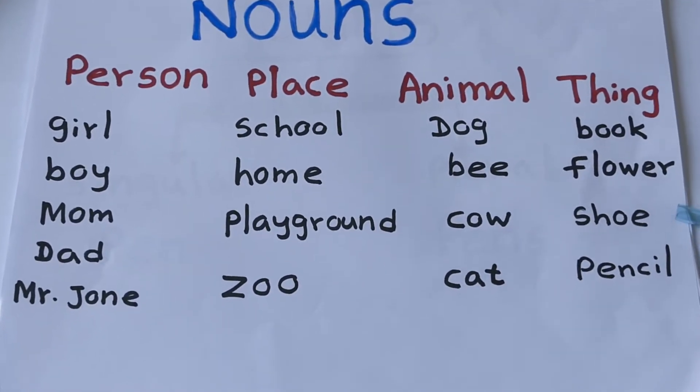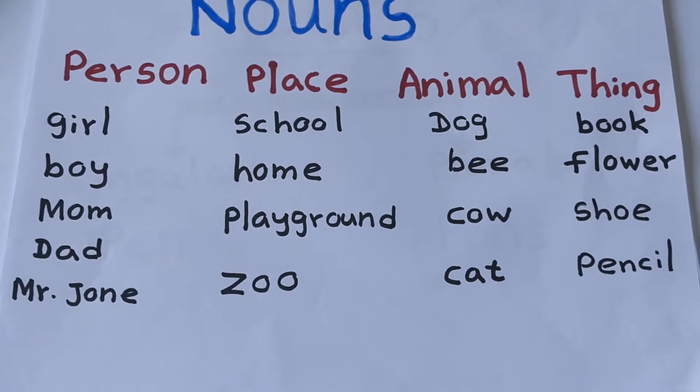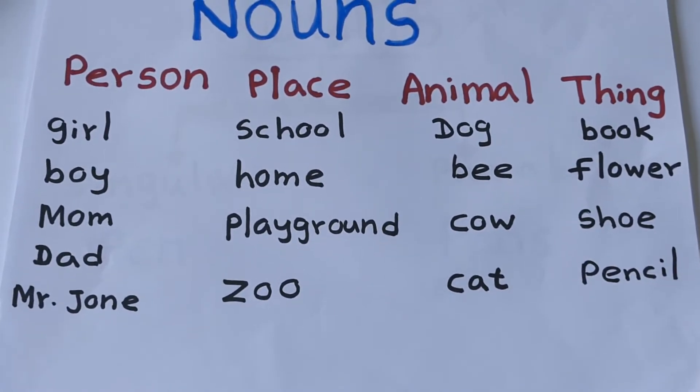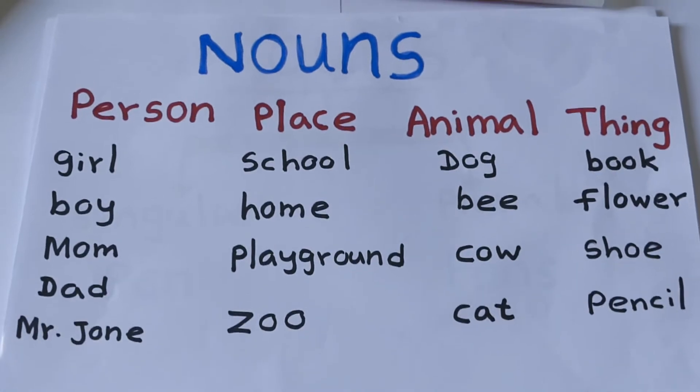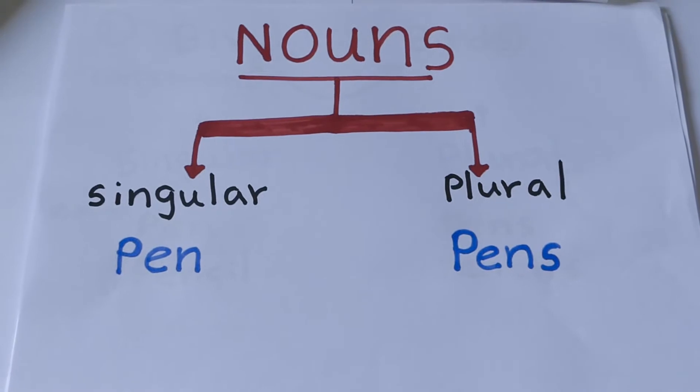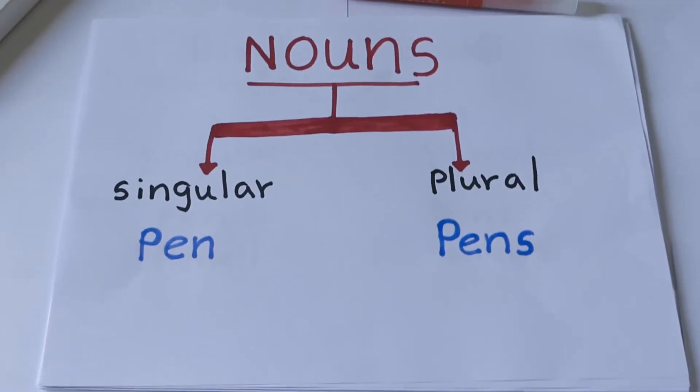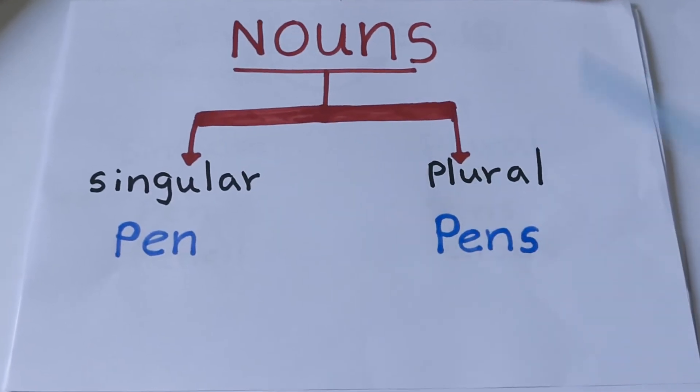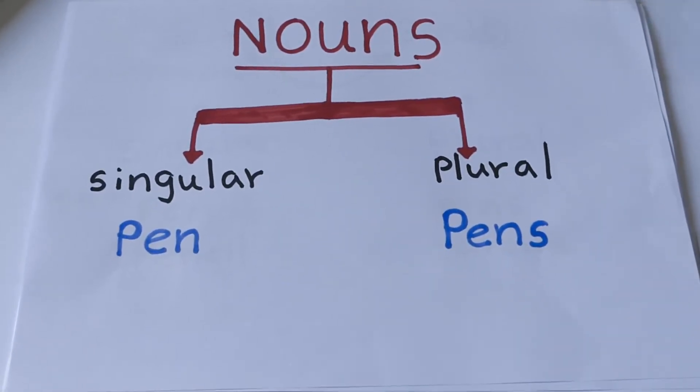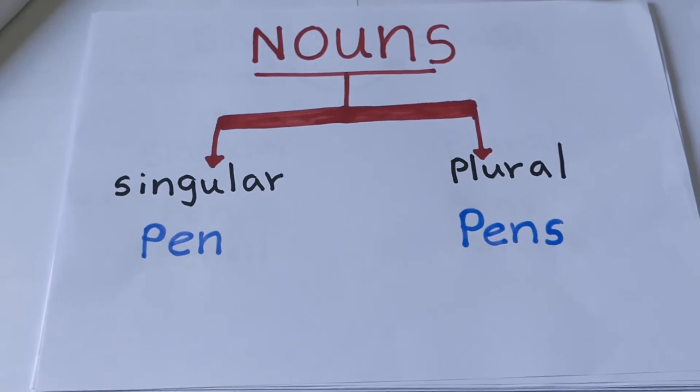What are the examples of things? Book, flower, shoe, pencil. Next, turn to the other page. Now nouns can be divided into singular and plural. Singular nouns, plural nouns.